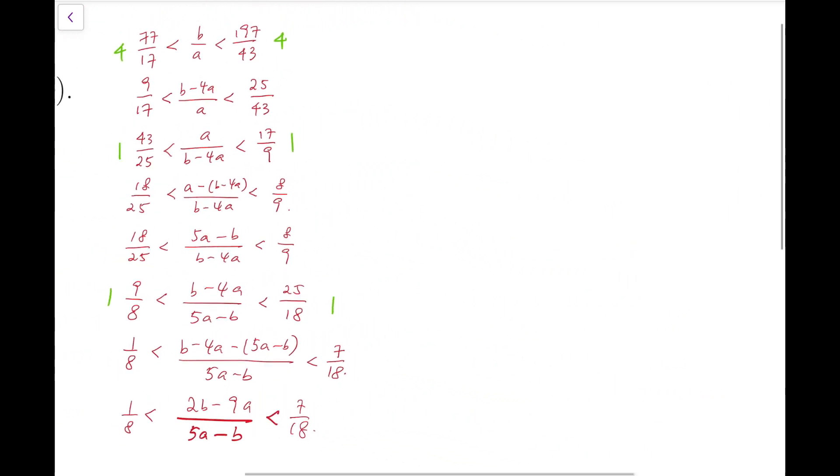Now we'll take reciprocal again. And we'll have 5a minus b over 2b minus 9a are between 18 over 7 and 8. Now, the integral parts are different. We have 2 on the left side and 8 on the right side. So to minimize the entries, I'm going to pick this fraction to be exactly 3. Now, I solved this very simple linear equation and I get 7b equals 32a. So that means a over b is equal to 7 over 32.